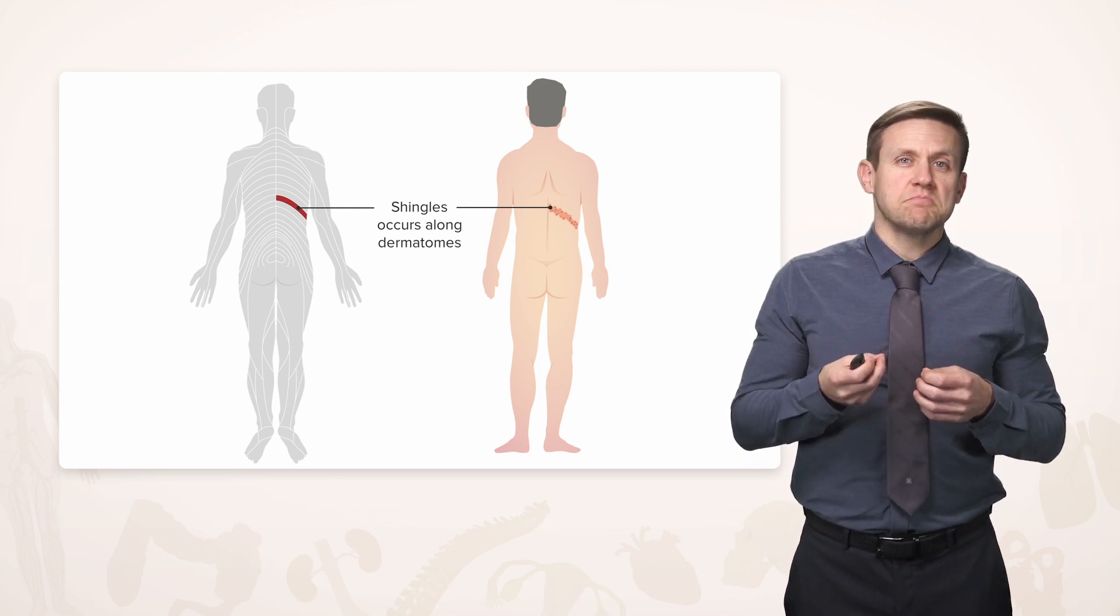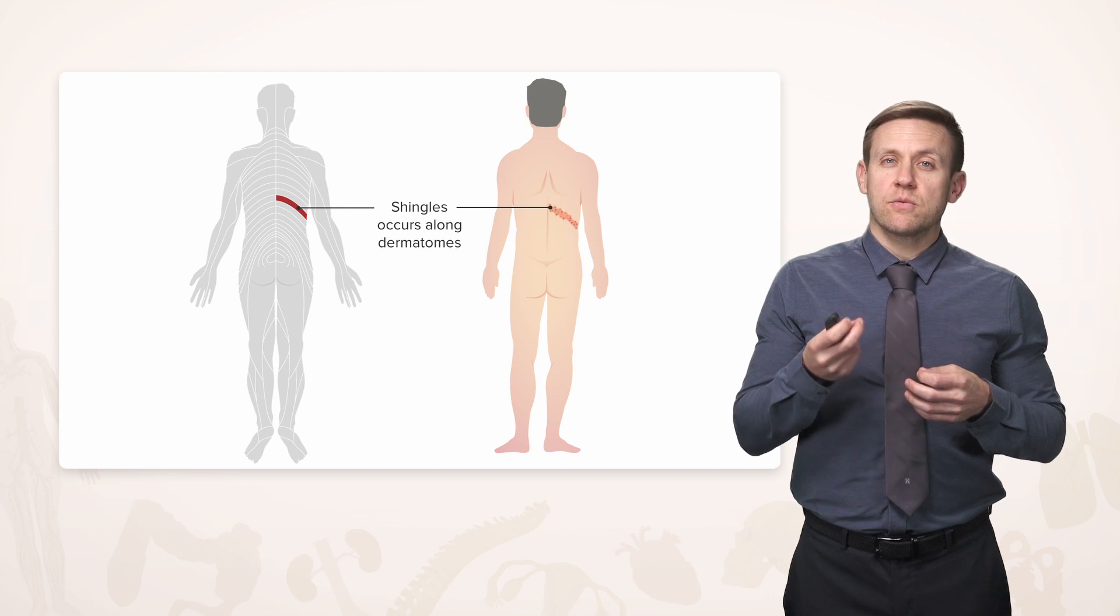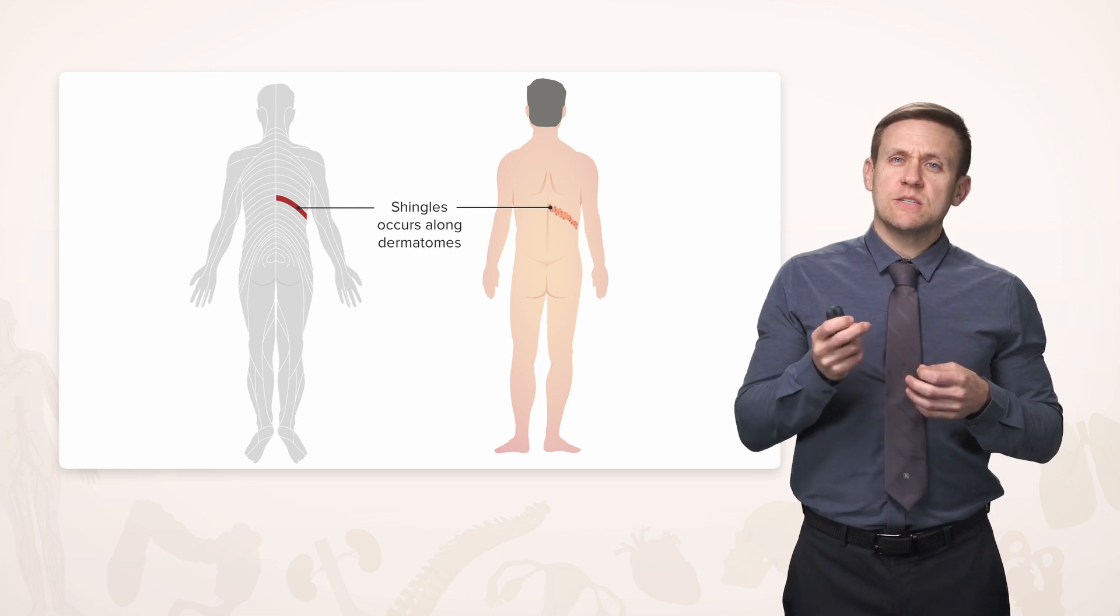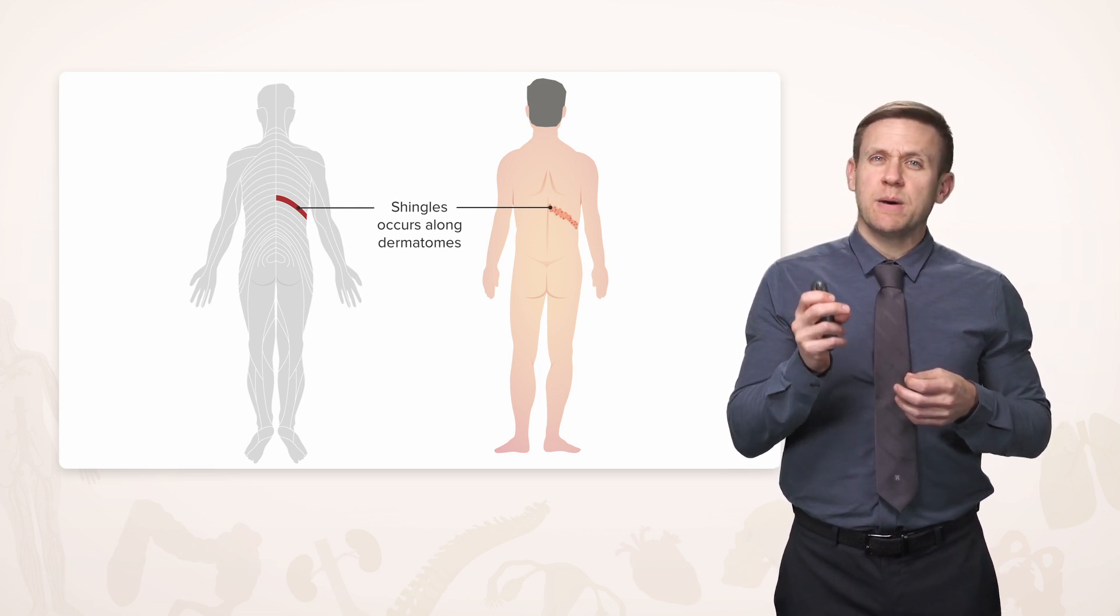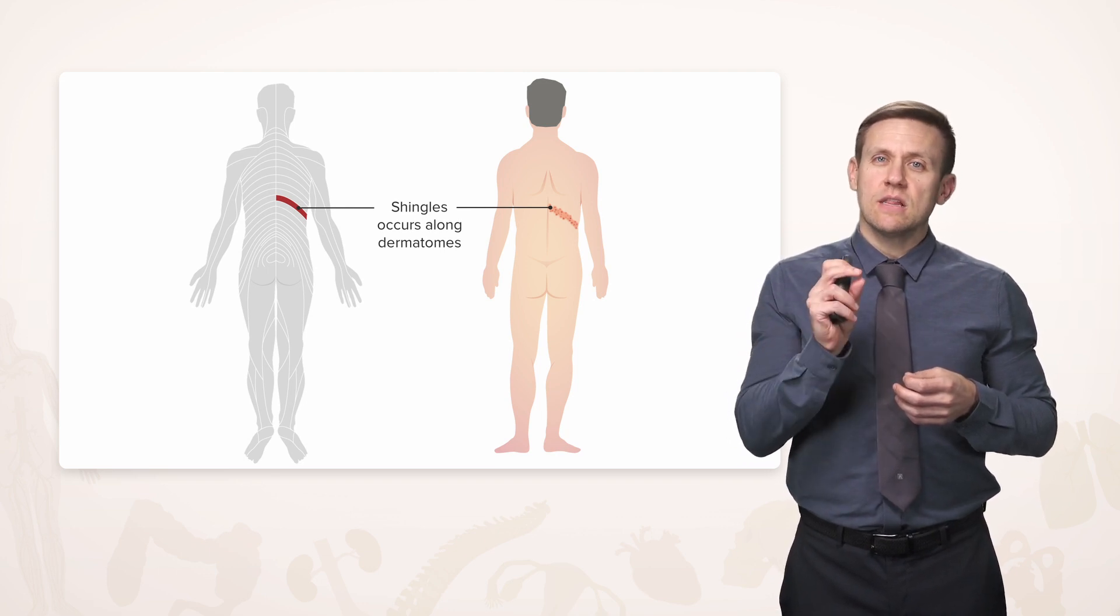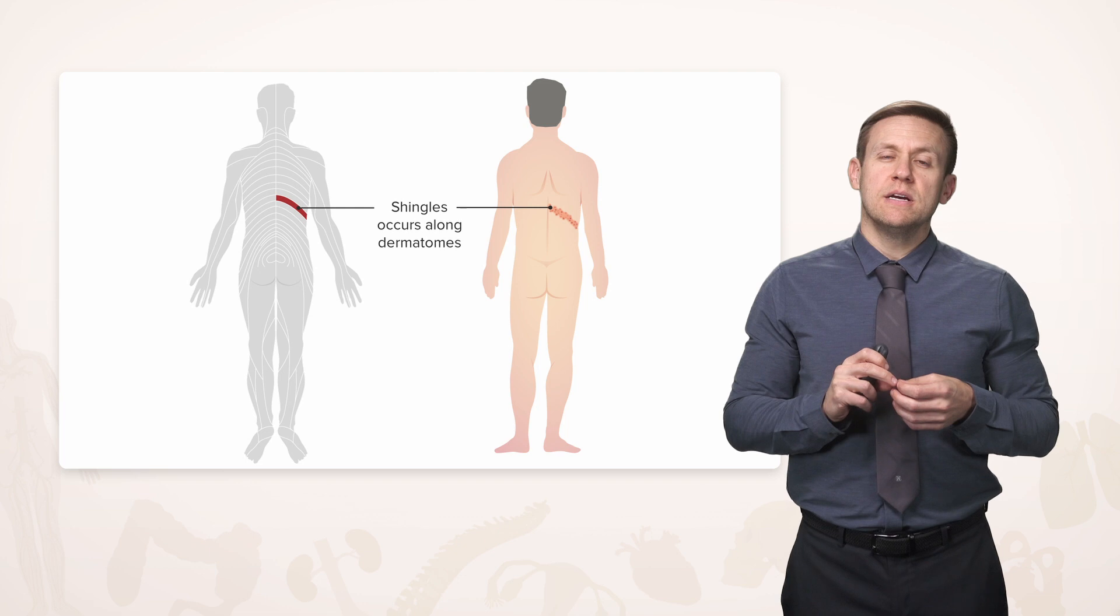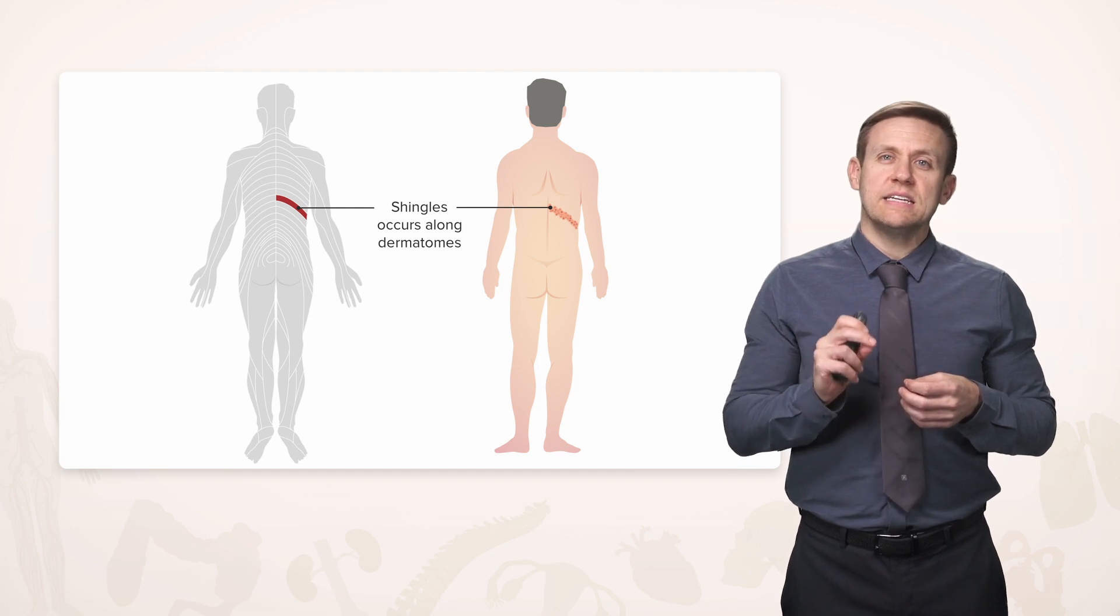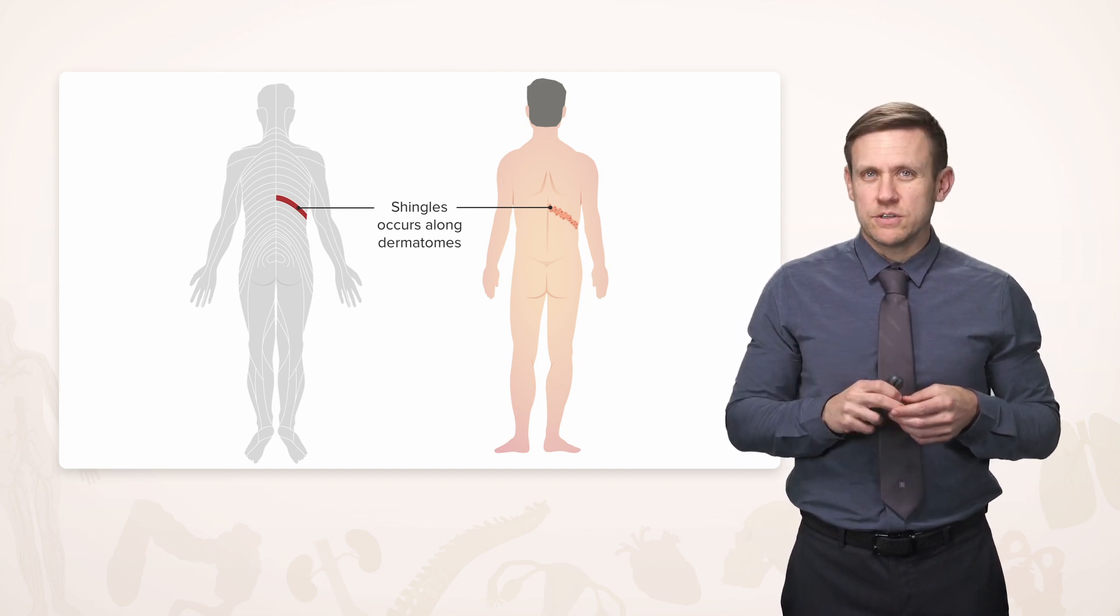So for example, here's an example of shingles along a thoracic dermatome. So the distribution of this rash, just by looking at it because it's this particular strip of skin, tells you it's along a thoracic dermatome, and it tells you that that virus was hiding inside one of the thoracic spinal nerves.